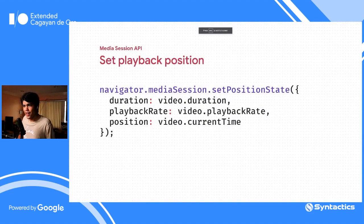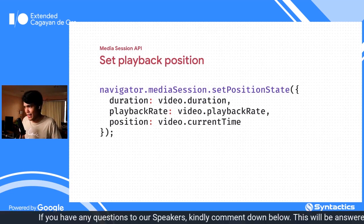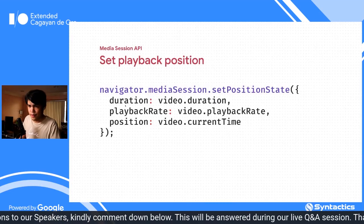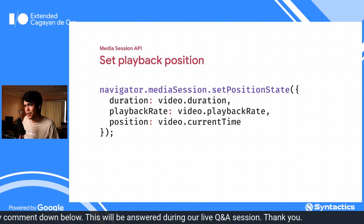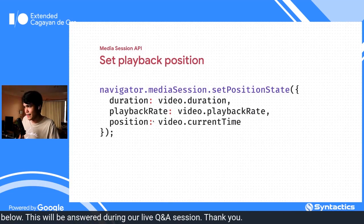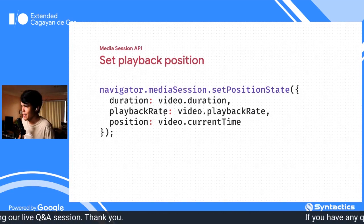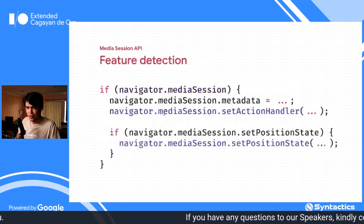To set the position state — the progress bar in your media notification — define the duration, current position, and playback rate, then the API keeps track of it as it progresses. For feature detection, check if navigator.mediaSession is defined before setting metadata or calling setActionHandler. For later API additions, also check if specific functions are defined before calling them.